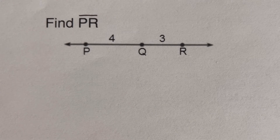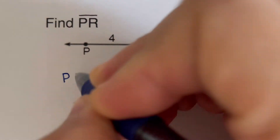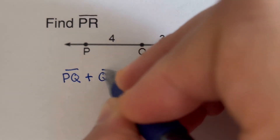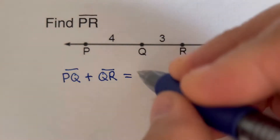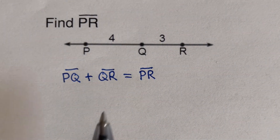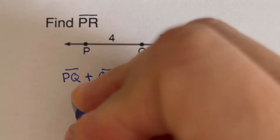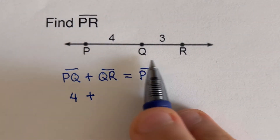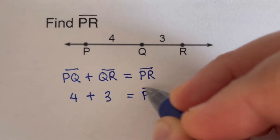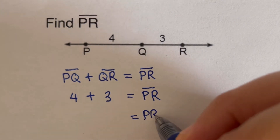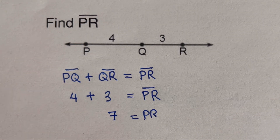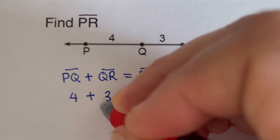We can write the formula: line segment PQ plus line segment QR is equal to the whole thing, line segment PR. Plugging the values in, PQ is 4 plus QR is 3, so line segment PR is 7. That makes sense because 4 plus 3 is 7.